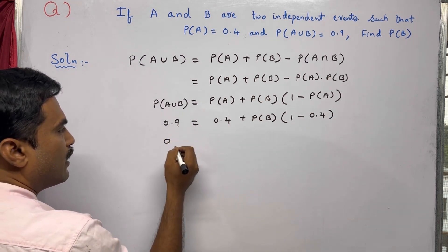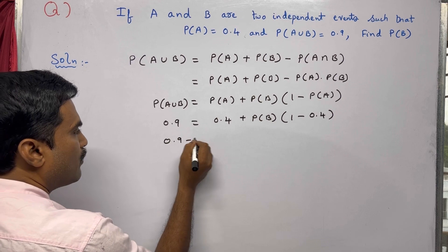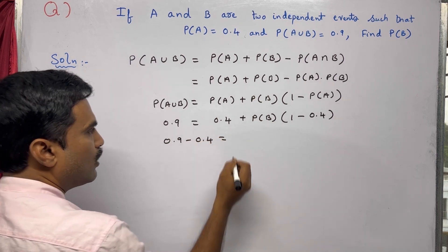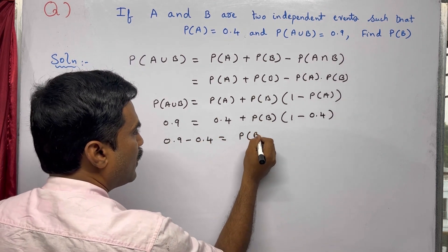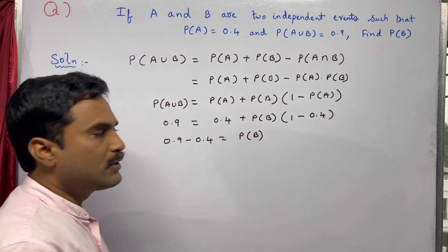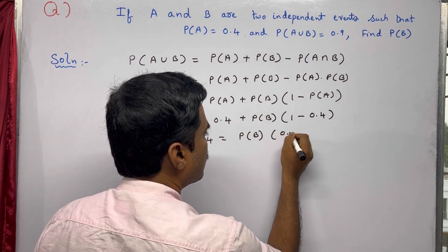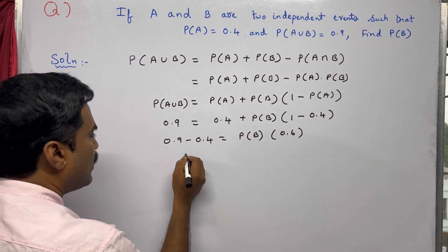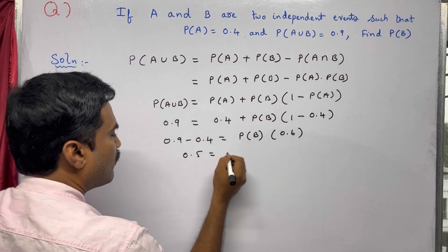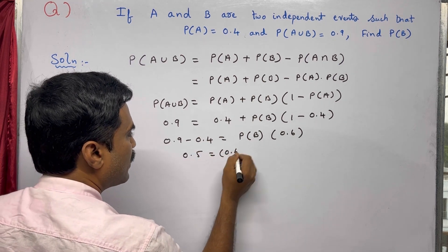Take 0.4 to this side, that will become minus. So 0.9 minus 0.4 equals P(B). Now 1 minus 0.4 is 0.6, so this will be 0.5 equals 0.6 times P(B).